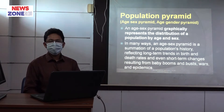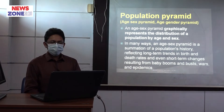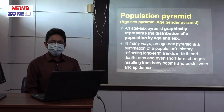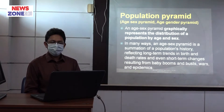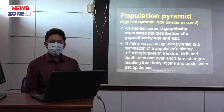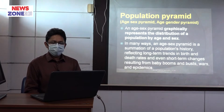Population pyramid is defined as the graphical presentation of age and sex distribution of a population of a country or a region. We have to look at age and sex distribution.